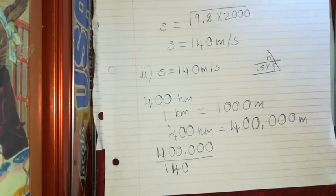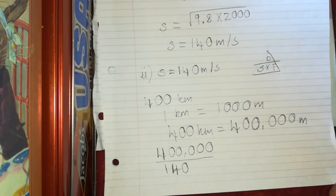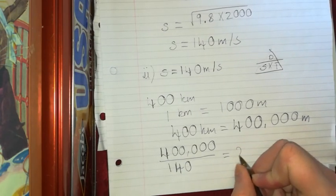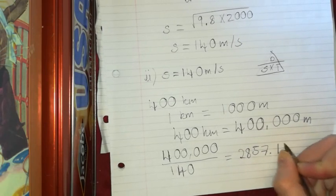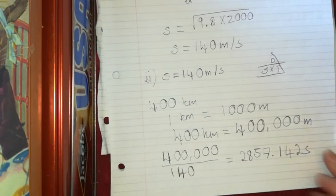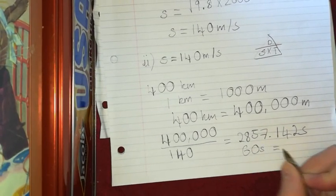So the distance is 400,000 and we are going at 140 meters per second. So 400,000 over 140 meters per second. So I get 2857.142. And that's in seconds.